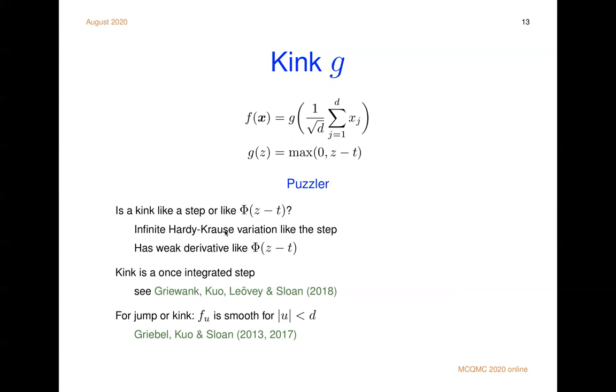Well, it's going to give you infinite variation in the sense of Hardy and Krause, just like the step. So maybe it should look like the step. Then again, it has a weak derivative. Only one weak derivative. This thing has all the derivatives, but so maybe it should be like this function, maybe it should be like that function. Well, let's find out.